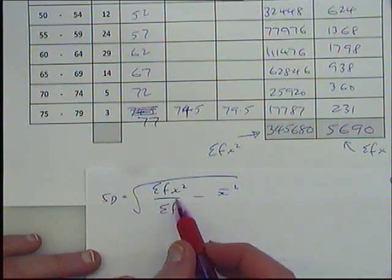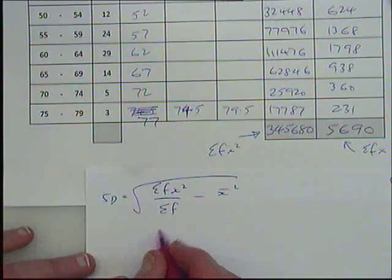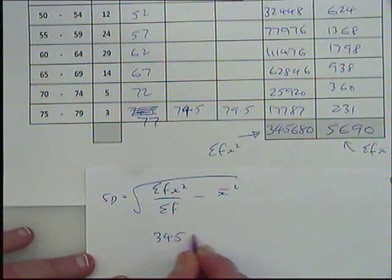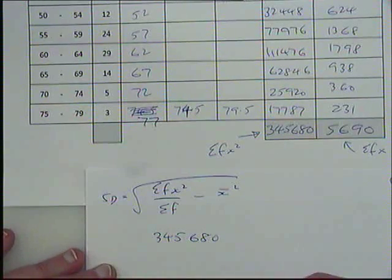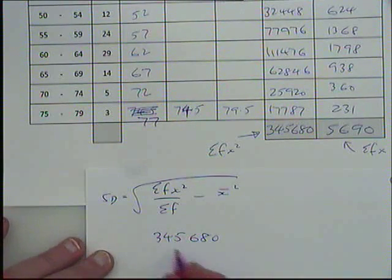It was sigma fx squared over sigma f minus the mean squared, square rooted. That was the standard deviation. Sigma fx squared is the total of the fx squared column. That is the 345680. Oh, sigma f, we didn't do sigma f.